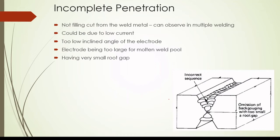One of the other defects is incomplete penetration. Incomplete penetration means the weld material does not completely fill in the gap. This could be due to low current, because when there is low current the heat may be low and the weld metal solidifies very quickly. Another reason may be a too-low inclination angle of the electrode, the electrode being too large, or having a very small root gap.